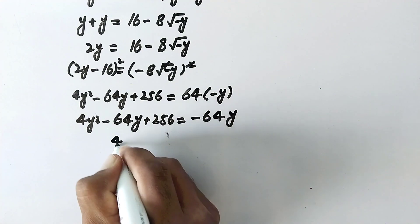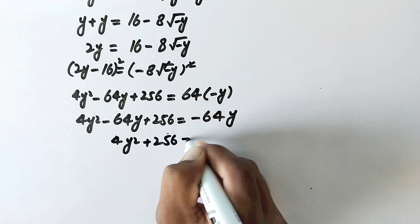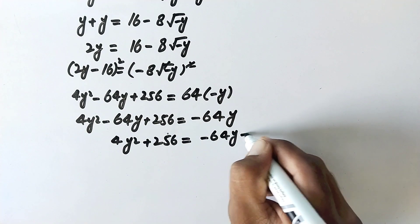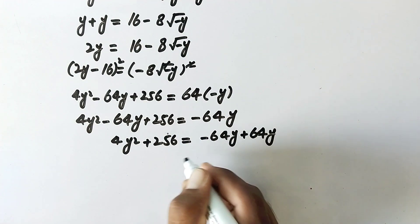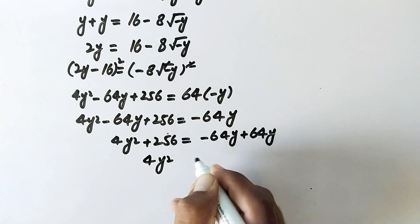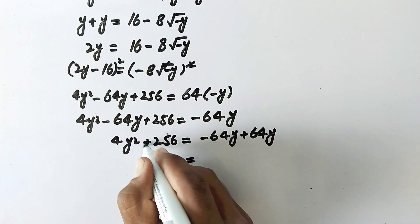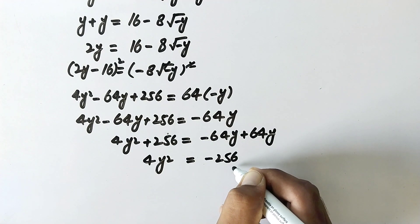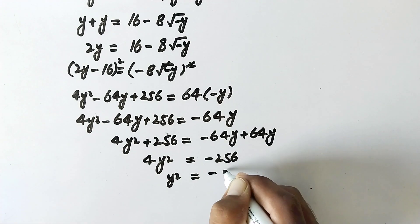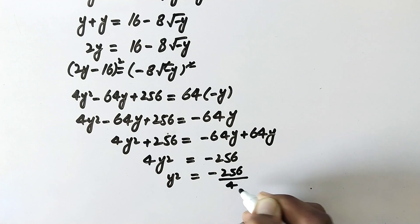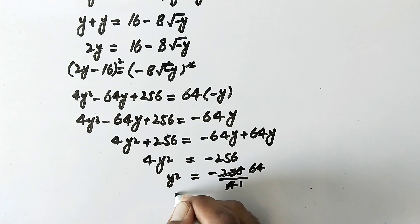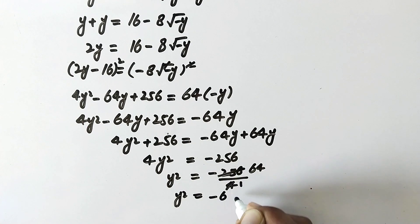So here we will write 4y squared plus 256 is equal to negative 64y. This negative 64 will be positive on the other side. In the next step, 4y squared plus 64y plus 256 is equal to 0, and then y squared is equal to negative 256 over 4.